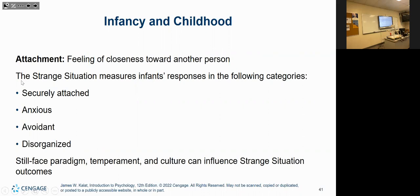Now let's discuss attachment theory. In infancy and childhood, we can observe kids and identify four different types of attachment styles: securely attached, anxious attached, avoidant attached, and disorganized attachment. The more secure we feel — going back to Erikson's trust versus mistrust — the more likely we are to go out and explore. If we're insecure and constantly scared, we're probably not going to try something new or adventurous.